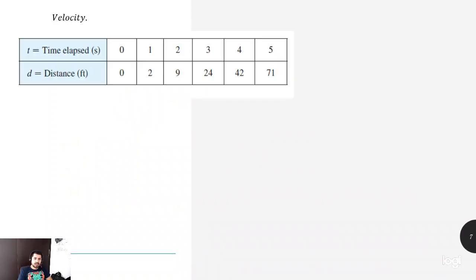So the third part of the calculus, velocity. Imagine that you have a table where in the first row you have the time elapsed given by seconds, zero seconds, one second, two seconds, so on and so forth. And we have the distance in feet. We have 0, 2, 9, 24, 42, 71. As you know, the rate of the increase is different, not constant. So it could be acceleration into that.